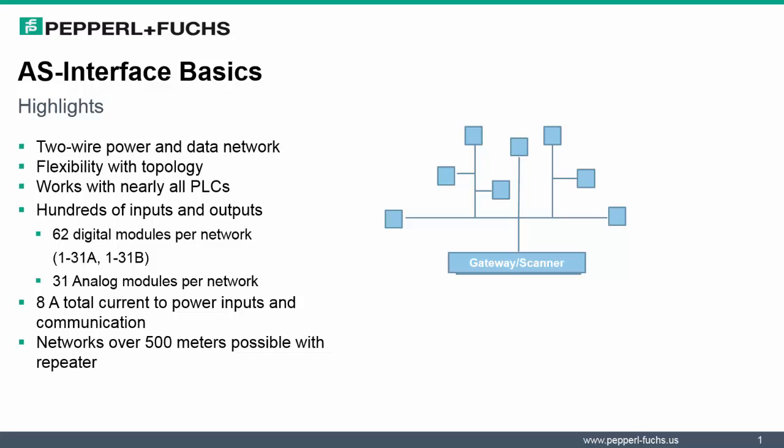AS Interface works with nearly all PLCs. The capacity of I/O counts varies. With the various addressing schemes, you could have up to 62 digital modules per network. There is also the ability to add analog modules to your networks as well. 8 amps is the total current to power inputs and communications. As you consider expansion with AS Interface, you could expand your networks for over 500 meters with repeaters.